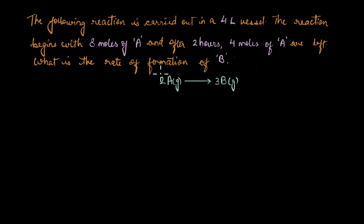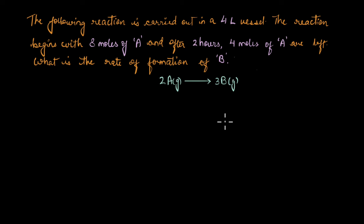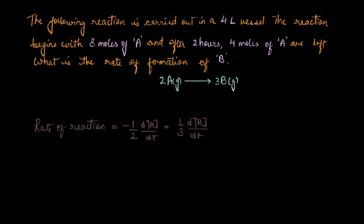We need to figure out what is the rate of formation of B. The reaction we have here is 2A → 3B. So how do we go about this question? First, let's write down what the reaction rate looks like. The rate of reaction is equal to minus one-half times dA/dt, which is equal to one-third times dB/dt.